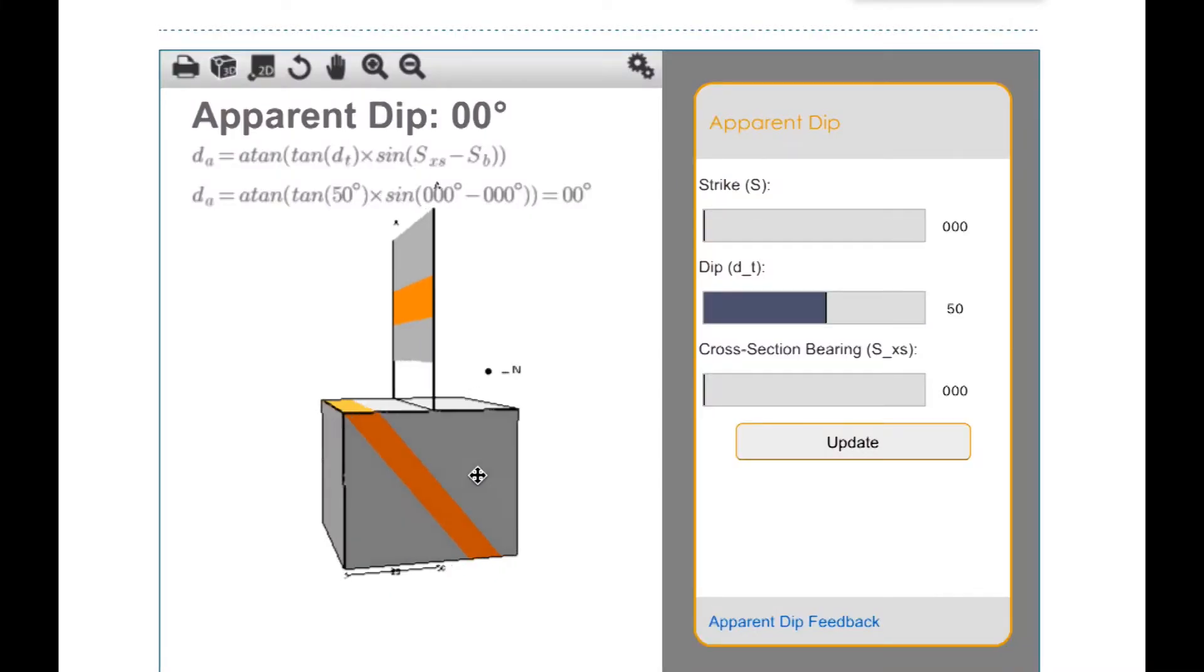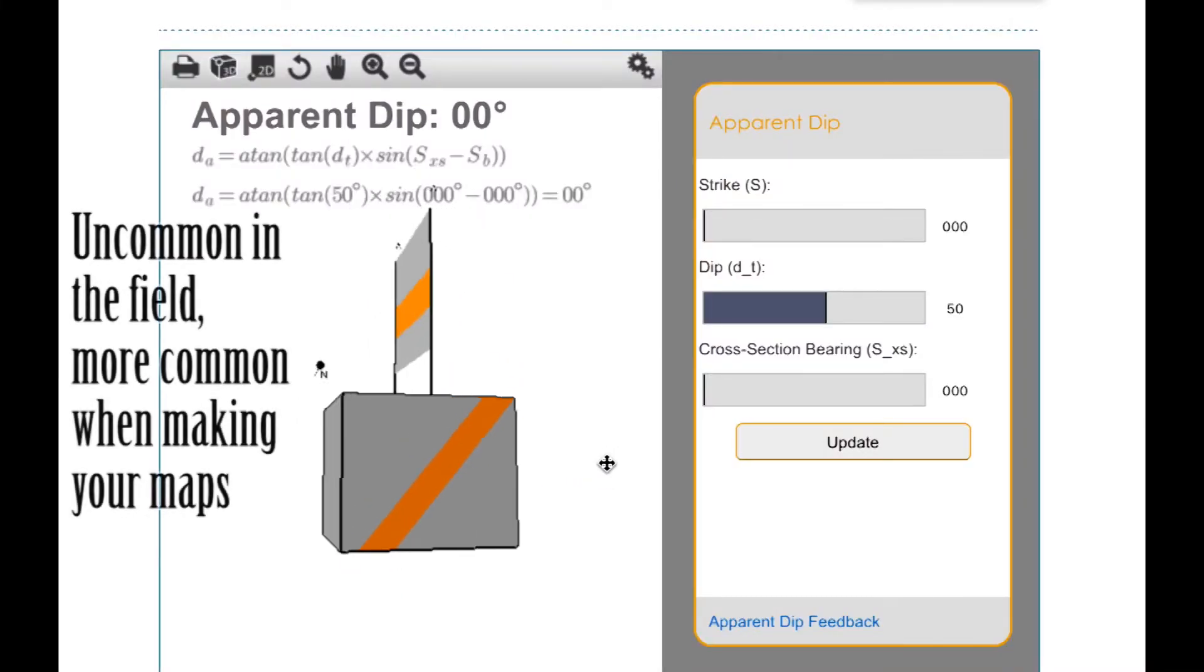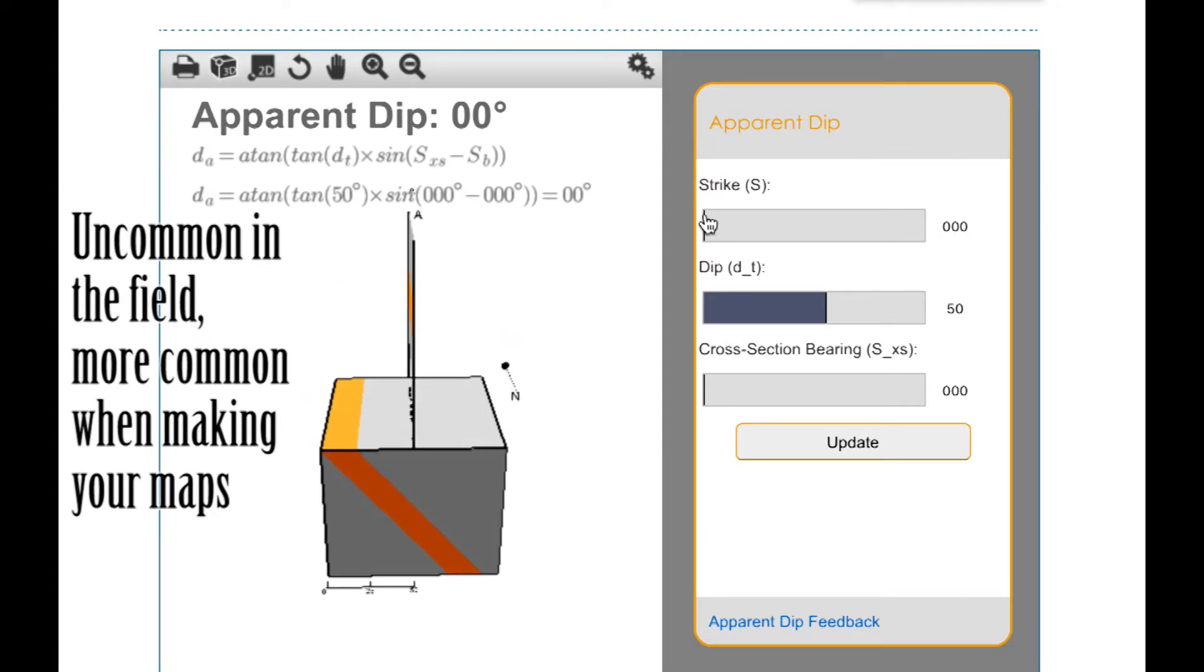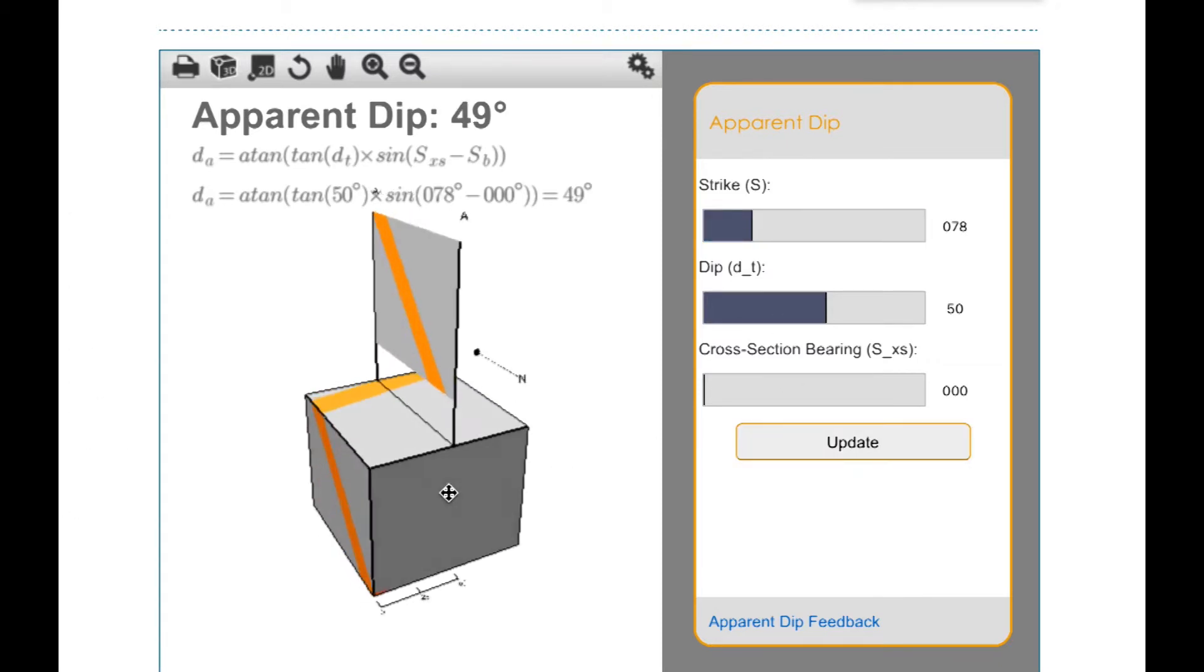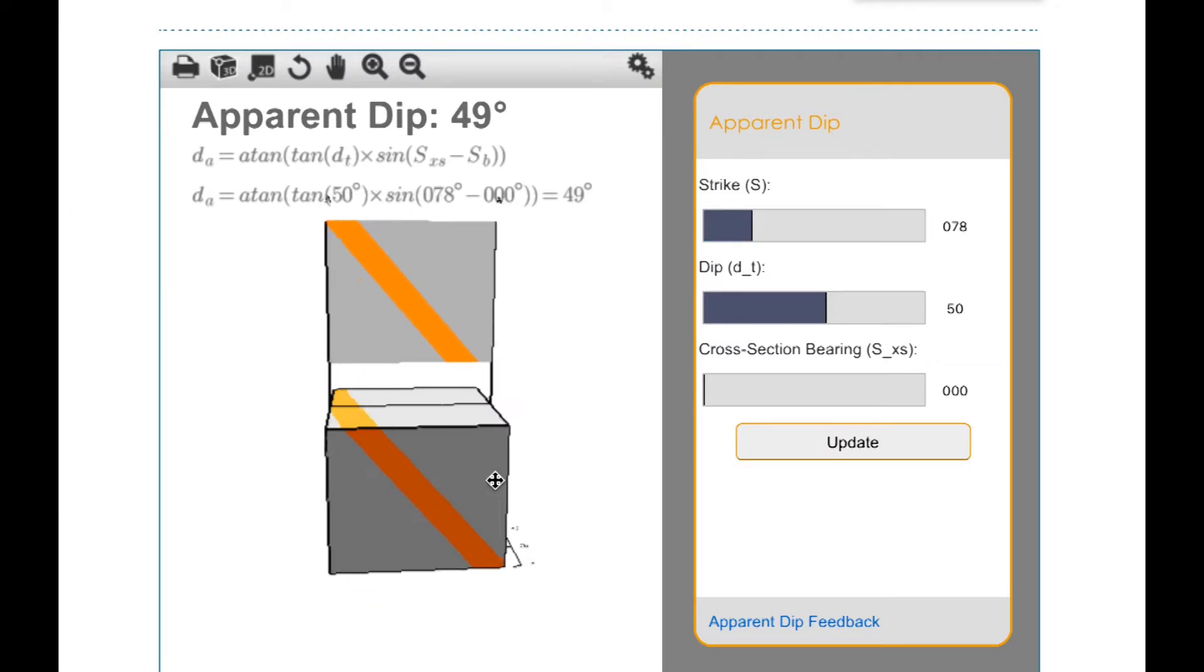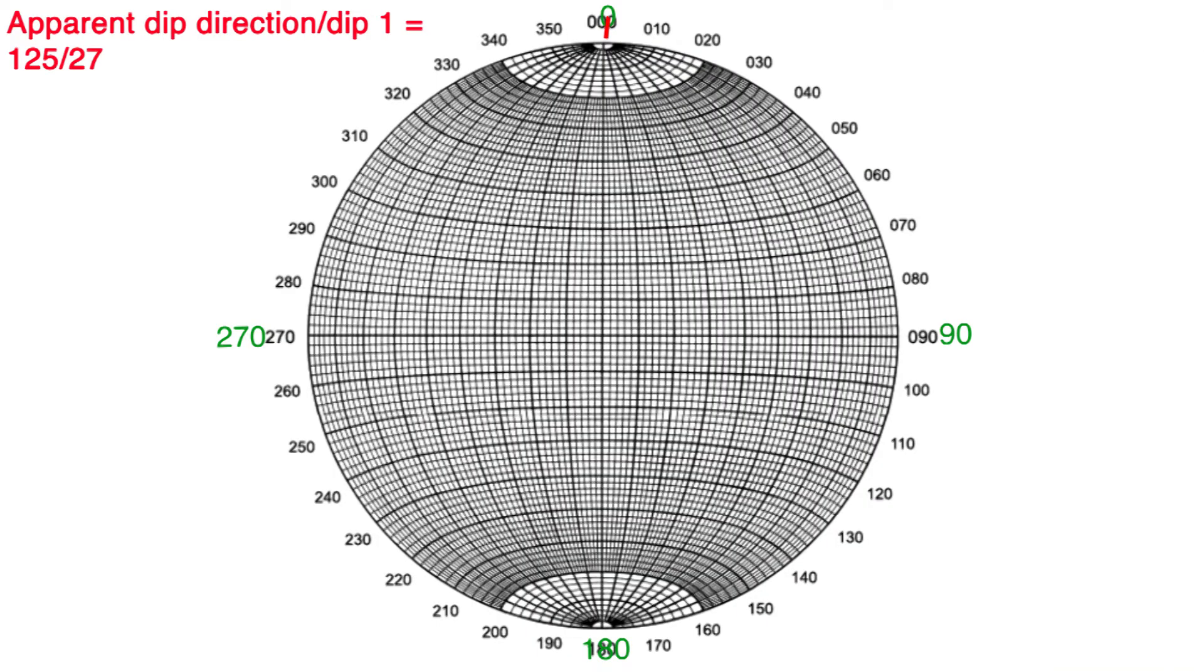But it isn't often we work the problem this way, and it'll be more likely that two or more apparent dips can be used to determine the true dip. As noted, an apparent dip is just a line on the plane of which we want to measure the true dip. So let's say one apparent dip measurement was at a trend and plunge of 125.7, and the other was 256.32. Treat these like lines, these apparent dips, and plot the points for each one, which we'll call A1 and A2.